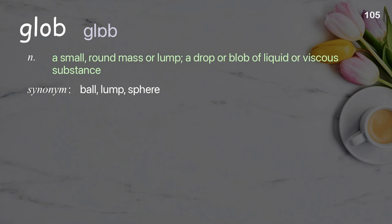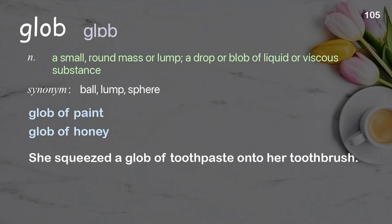Glob: a small, round mass or lump; a drop or blob of liquid or viscous substance. Examples: glob of paint; glob of honey; she squeezed a glob of toothpaste onto her toothbrush.